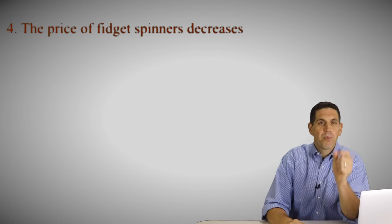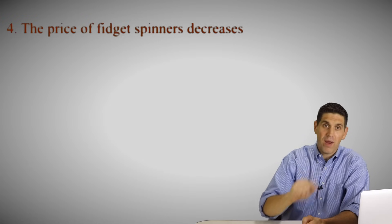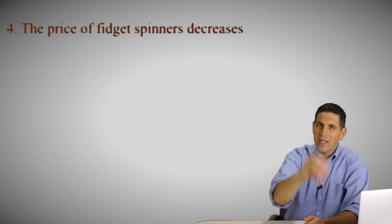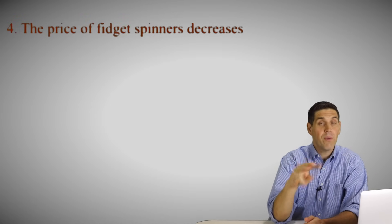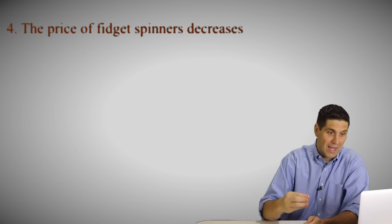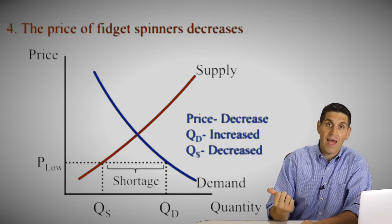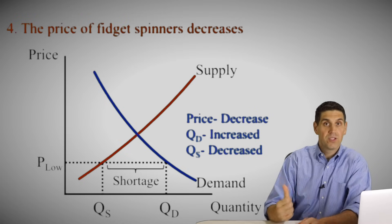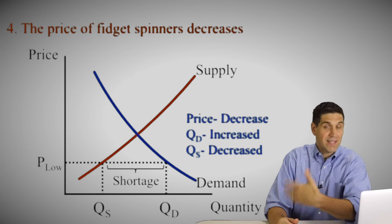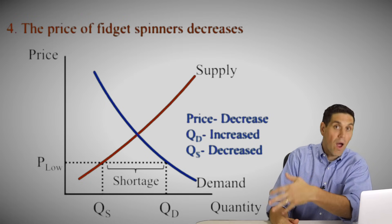Scenario four: I'm trying to be tricky here — the price of fidget spinners themselves fell. In scenarios two and three, prices changed but they weren't the price of the product we're analyzing. In scenario two it was the price of bearings — a resource; in scenario three it was the price of fidget cubes — a different product. But in scenario four, it's the price of the actual product we're analyzing. So if the price decreases, that does not shift the curve. There is no shift. The quantity demanded would go up, the quantity supplied would go down, and we'd have a shortage at disequilibrium.